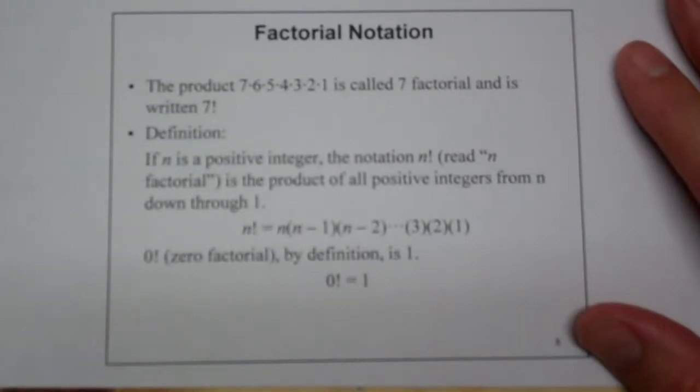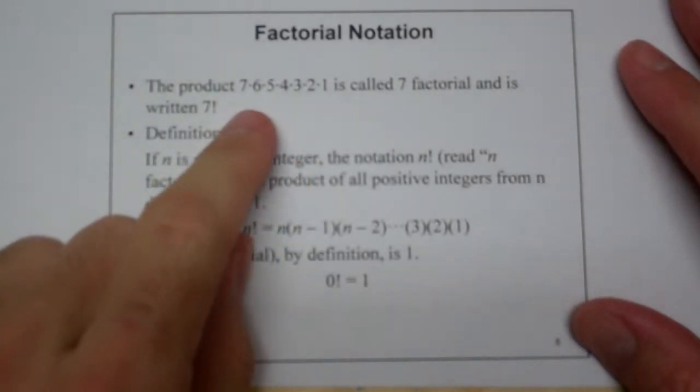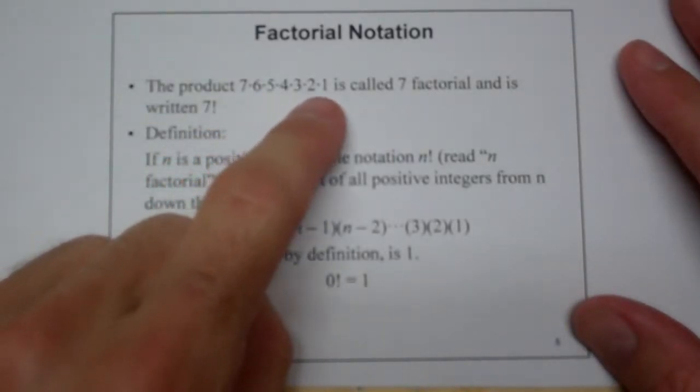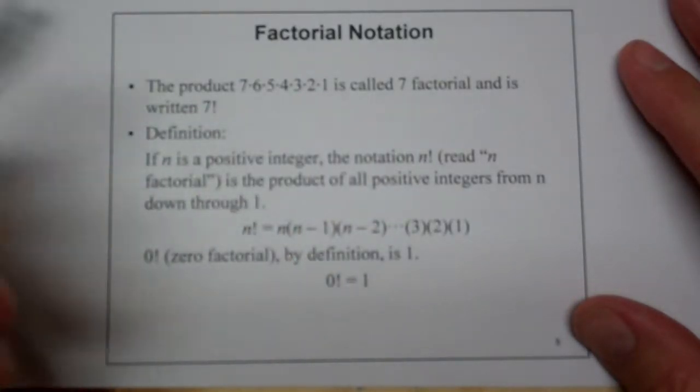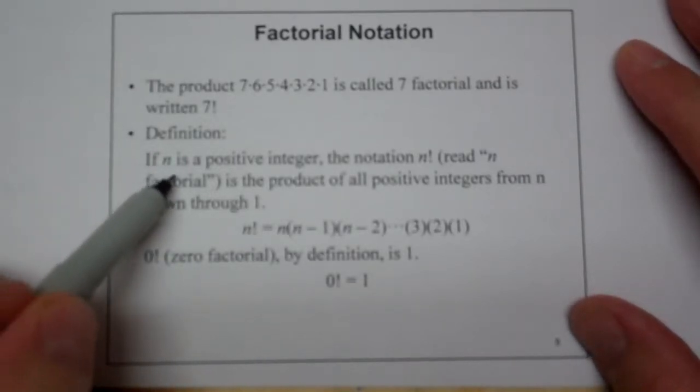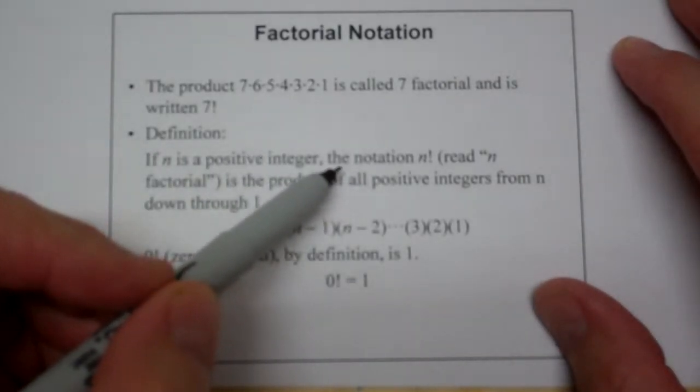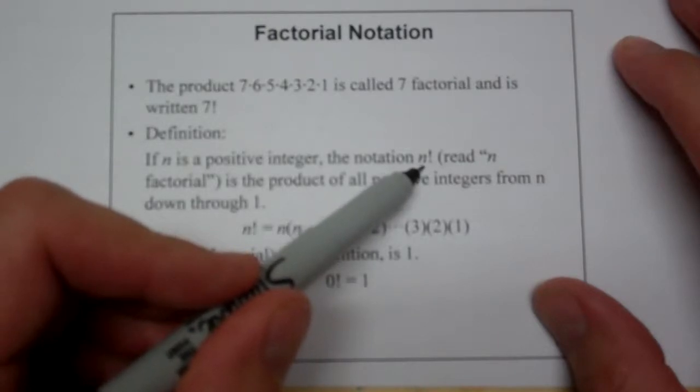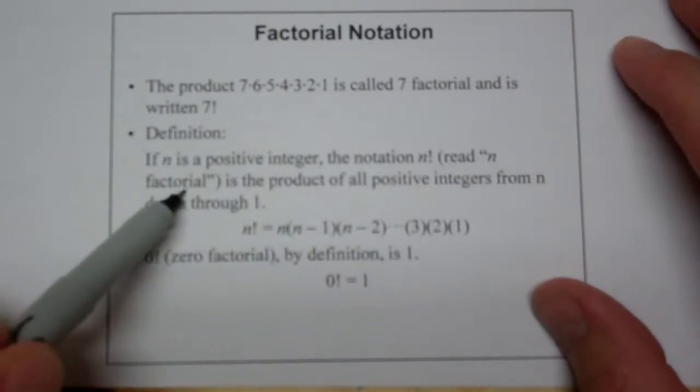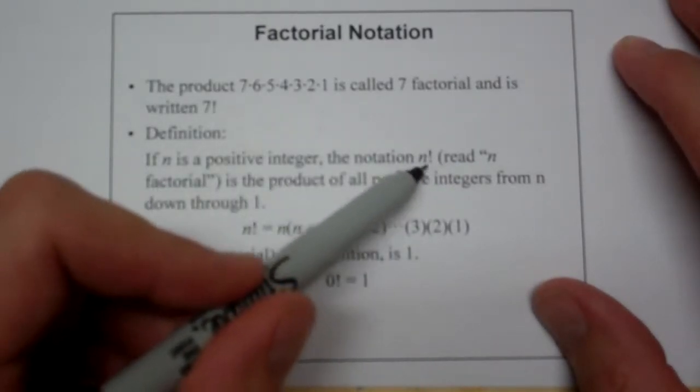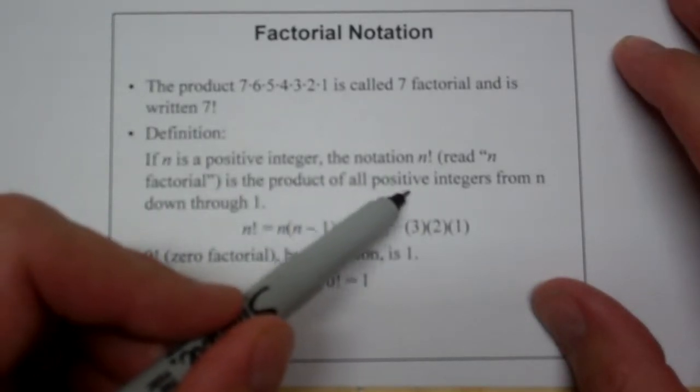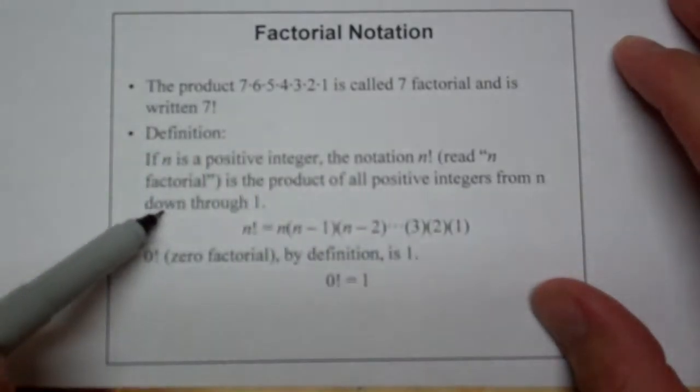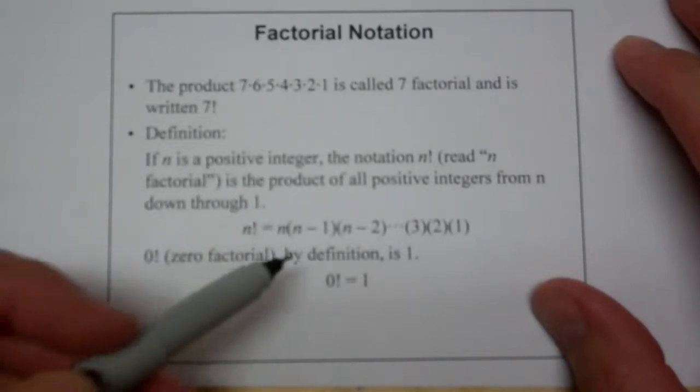So permutations get really big really quickly. It does not take very many items to have a very large count of ways of ordering them. So that brings us to the factorial notation. Just like I said, the seven, six, five, four, three, two, one is called the seven factorial and is written with the exclamation point. And the definition is if n is a positive integer, the notation n with the exclamation point, which is read factorial, n factorial is the product of all positive integers from n down through one.